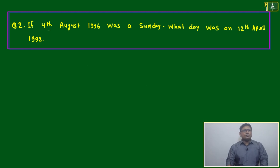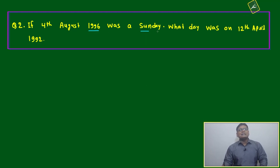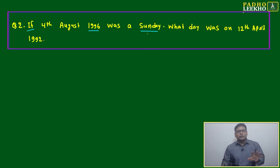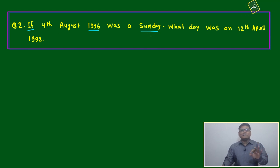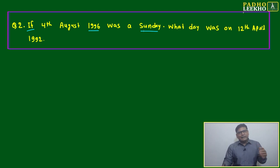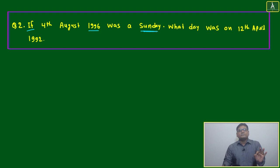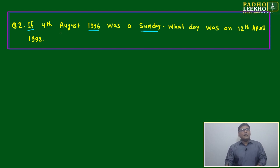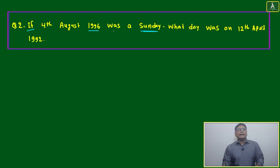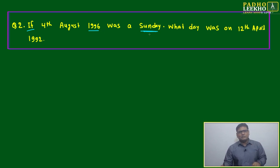Question number two: if 4th August 1996 was a Sunday — this is given in the question. If it is given, no need to verify; most of the time it will be given on the correct date and day only. But if it is not the correct day, we still have to calculate based on this reference. The question states: if 4th August 1996 was a Sunday, what day was 12th April 1992?